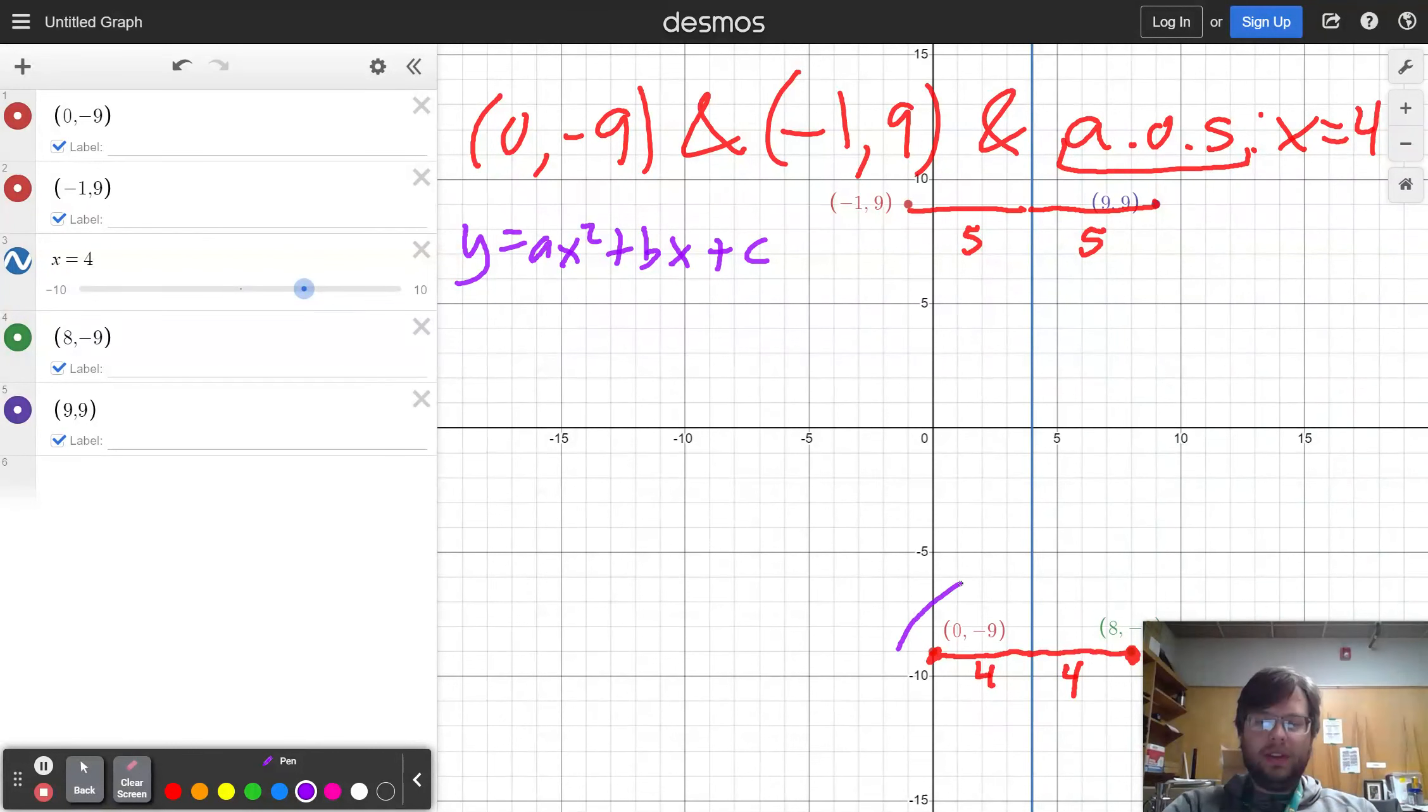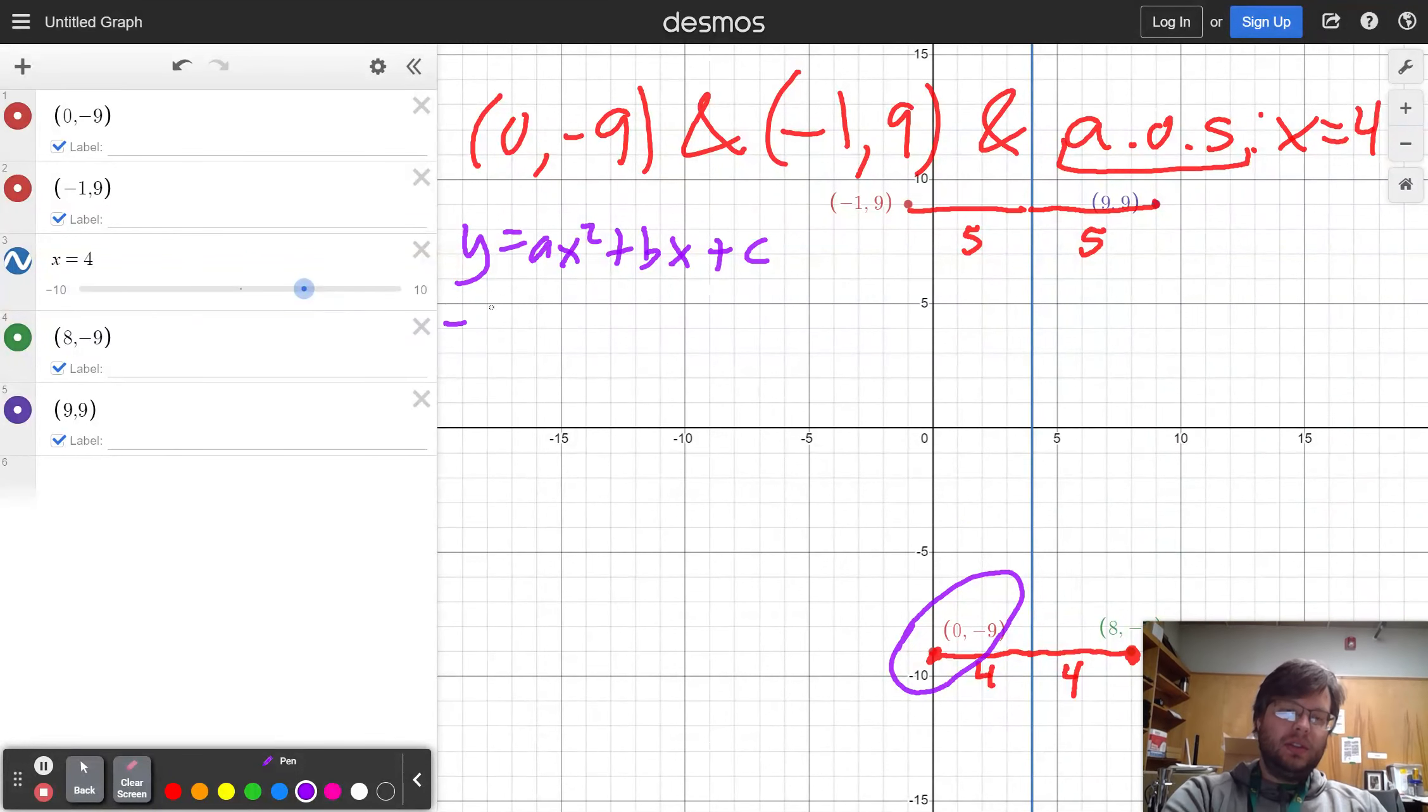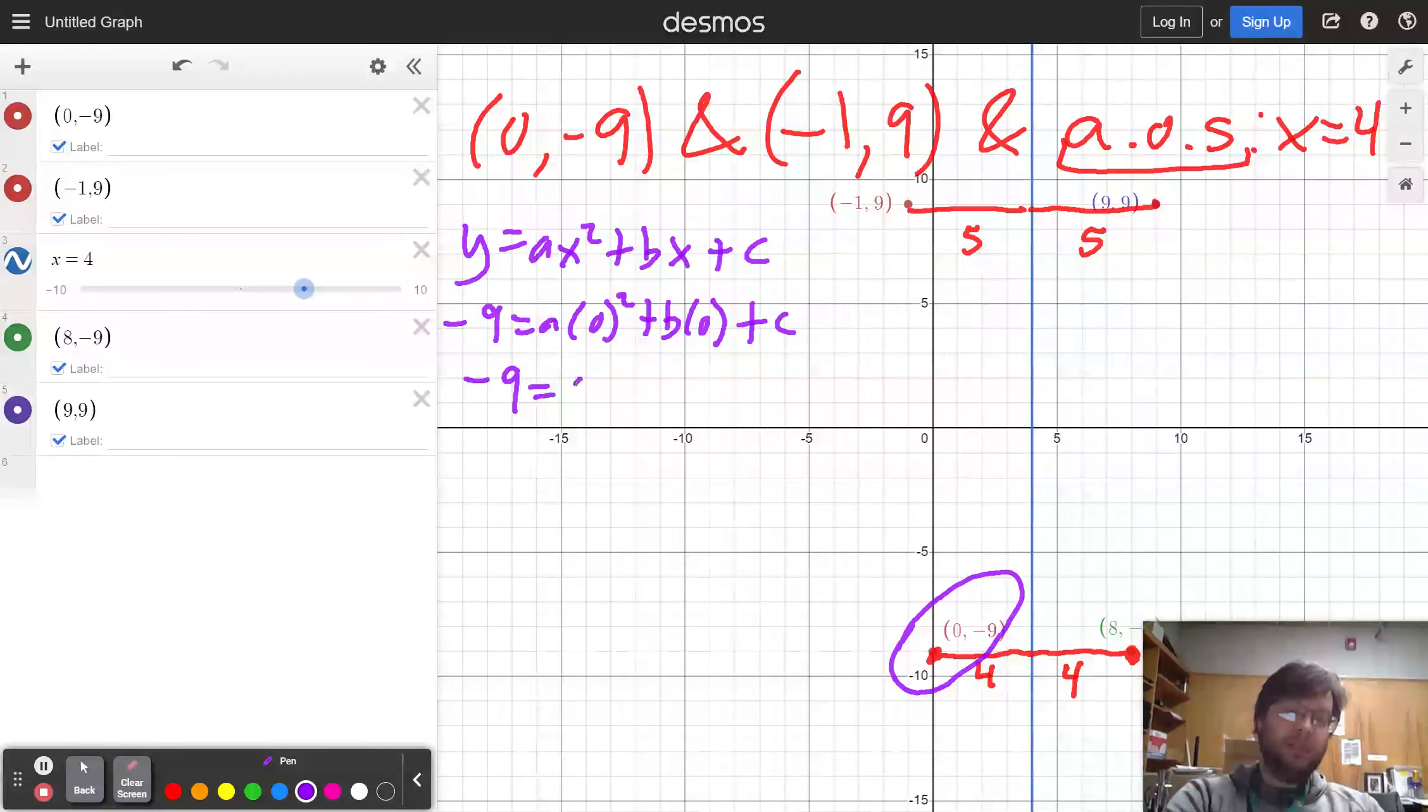First thing I'm going to do is I'm going to use the fact that if I plug in x equals 0, I get y equals negative 9. So that means negative 9 is a times 0 squared plus b times 0 plus c. In other words, negative 9 is equal to c.